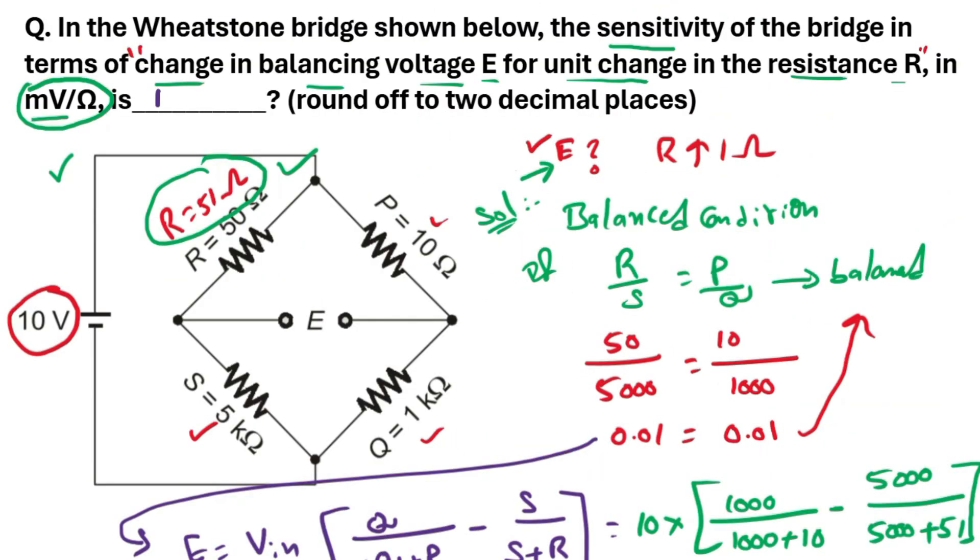So the answer is 1.96 millivolts per ohm. And this question is asked in 2025 GATE examination.